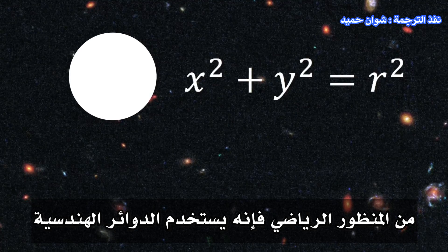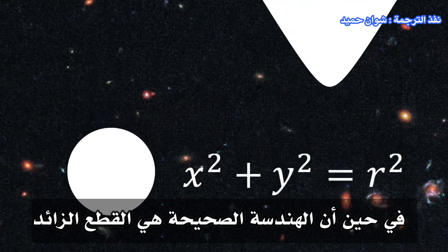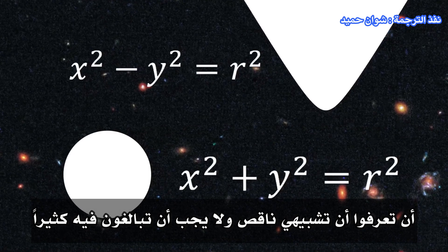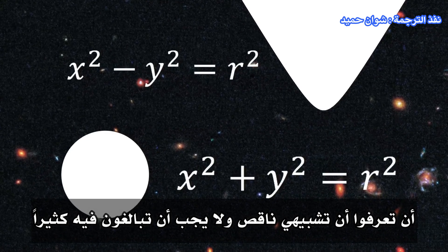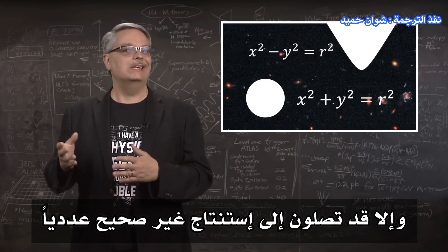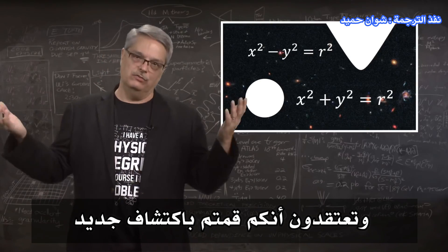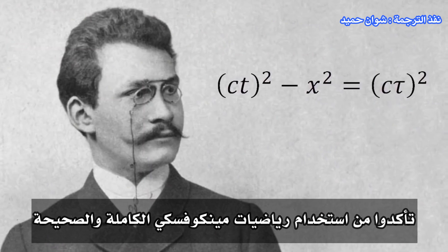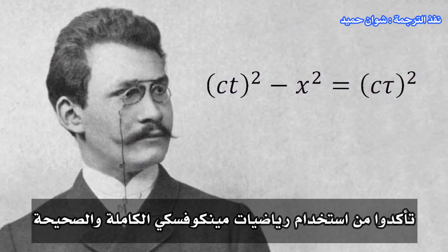From a mathematical point of view, it uses the geometry of circles, while the proper geometry is that of hyperbolas. I only bring this up because I want you to know my analogy is imperfect and you shouldn't push it too far. Otherwise, you might come to a numerically incorrect conclusion. If you want to dig into this more deeply, be sure to use the full and proper Minkowski mathematics.